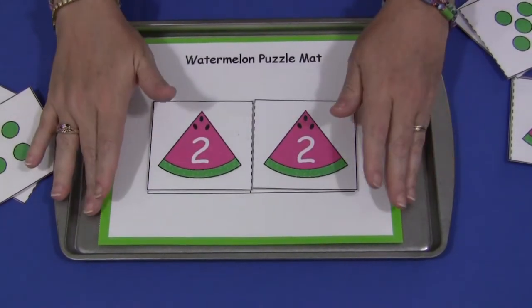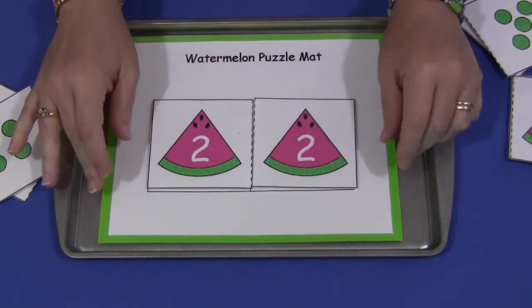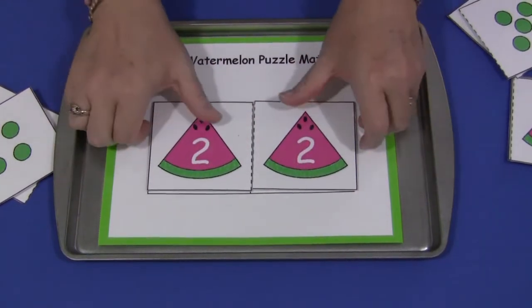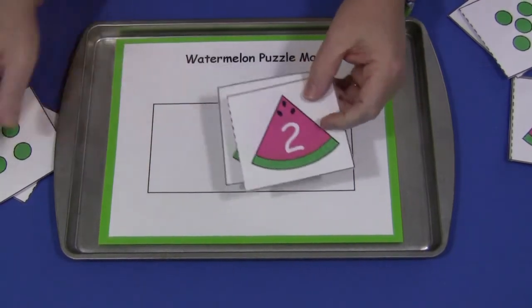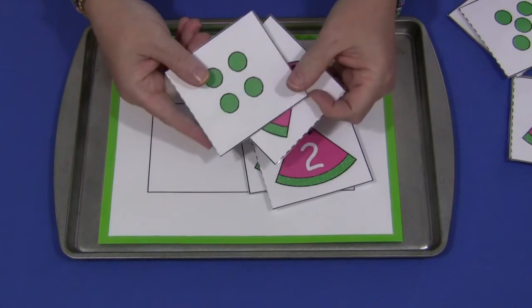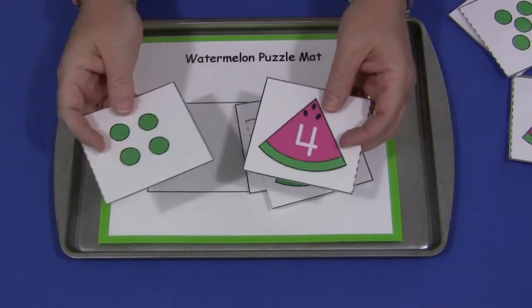And for centers like this I just store them in a large manila envelope with a label on the front of them. And the number to number puzzles are in one ziplock bag. And then the number to number dots are in another ziplock bag. And that's all inside a manila envelope for this activity for the math center.